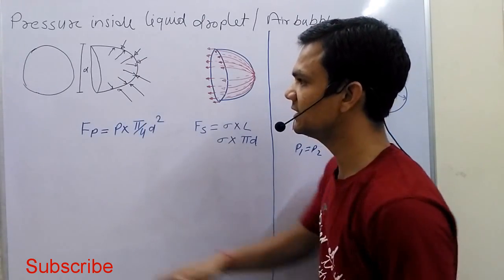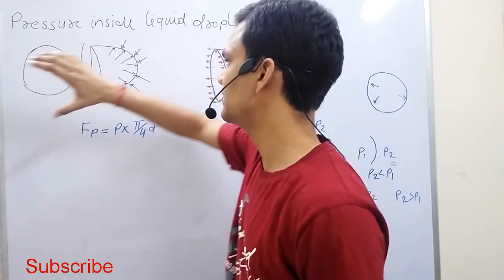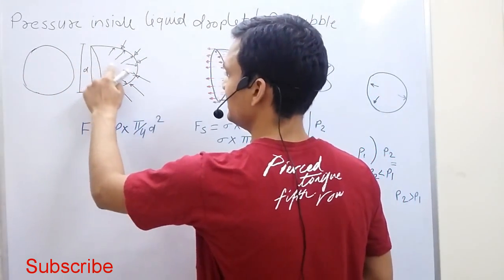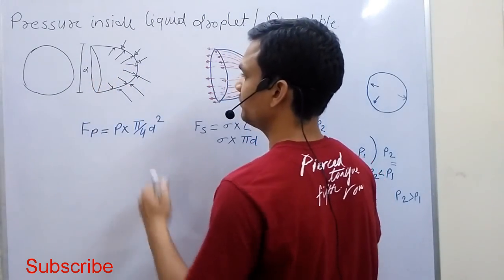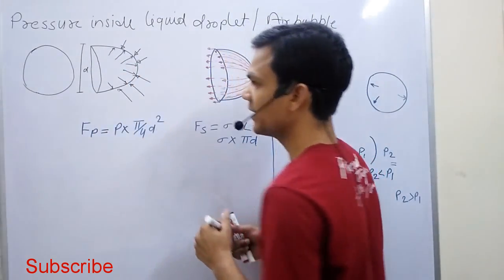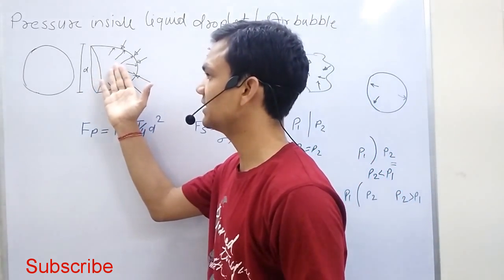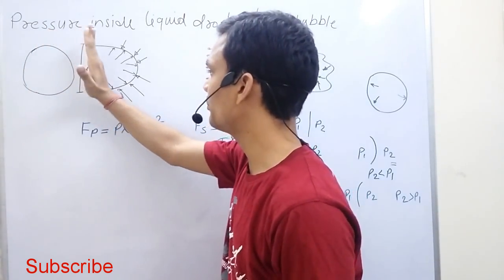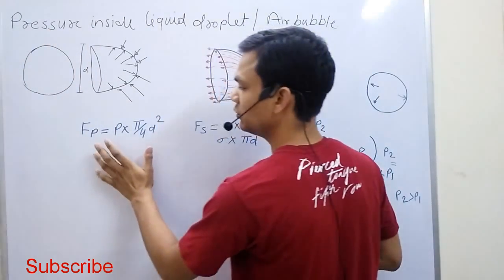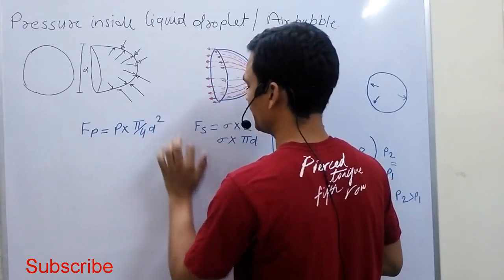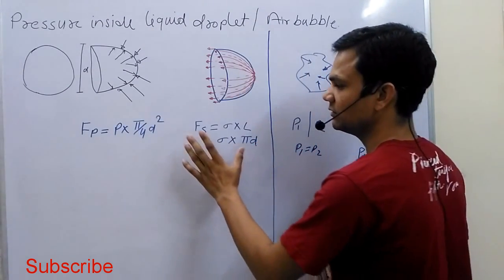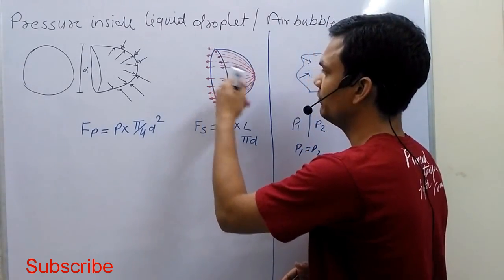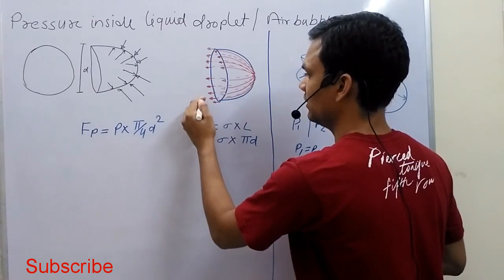We understand how we calculate the pressure inside a droplet. Suppose we consider a cross-section area of a spherical shape and cut it into two parts. The pressure inside is more, above the atmospheric pressure, so it acts on this cross-section area. The pressure force will be equal to pressure multiplied by pi r squared. The other force is the surface tension force.